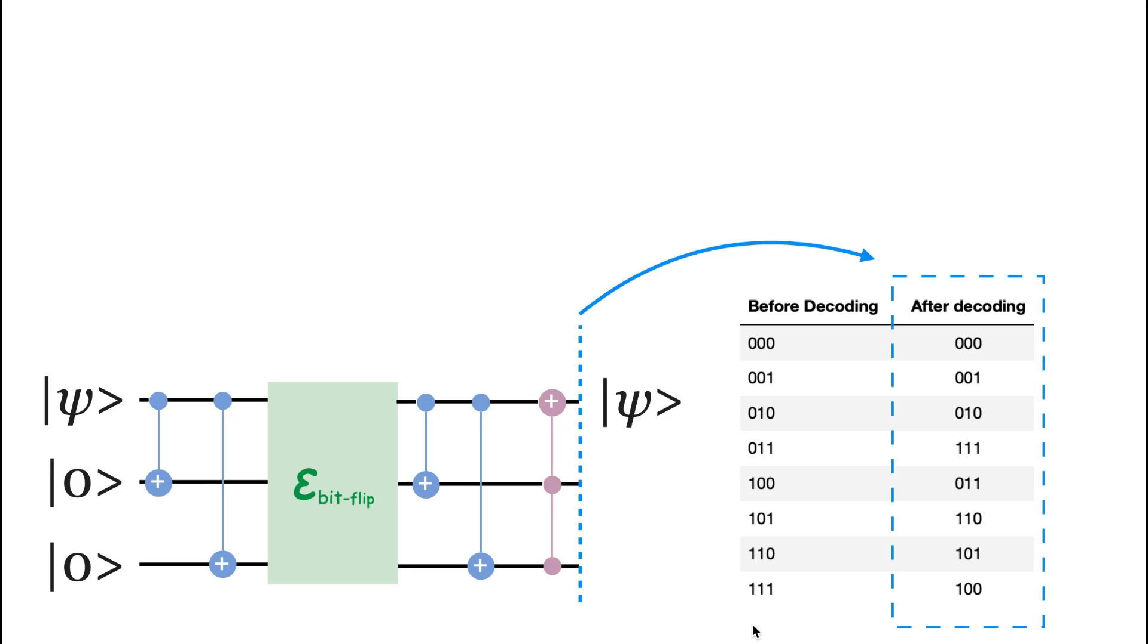If at the output state, there are more zeros than ones, then the decoder will decode the information to be zero state, which means that the first qubit in this case will be zero at the output.